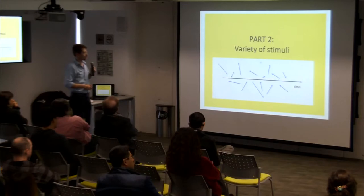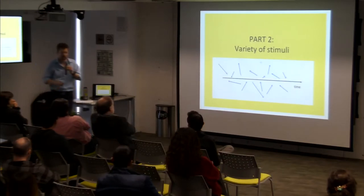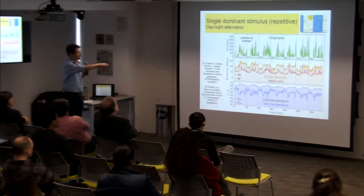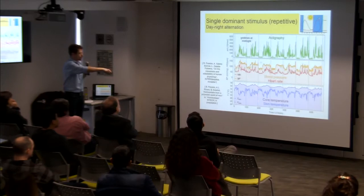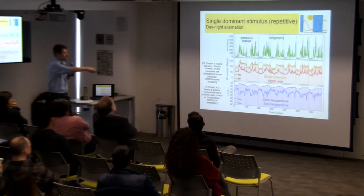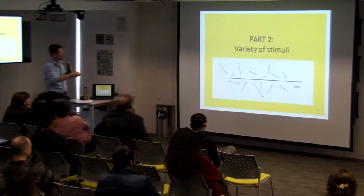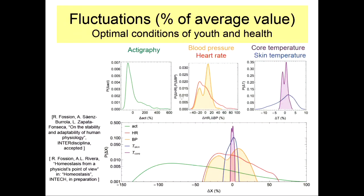Let me go to the second part: what happens if the body needs to respond to a variety of stimuli? Do you remember the time series I showed — actigraphy over one week, blood pressure, heart rate, core temperature, skin temperature? What I did was study the fluctuations of these time series as a percentage of the mean for all these variables, getting dimensionless fluctuations expressed as a percentage of their respective mean, giving some distributions for each variable.